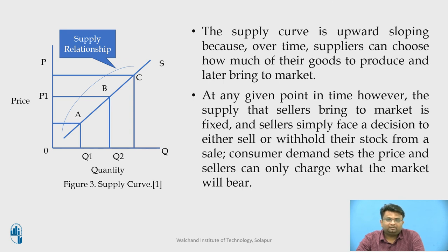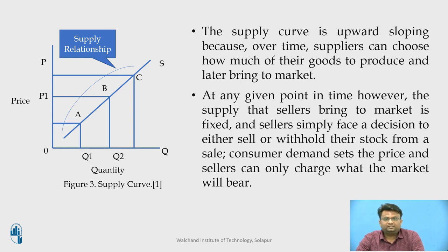At point A, the quantity supplied is Q1 at price P1. A supply curve is upward sloping because over time suppliers can choose how much of their goods to produce and bring to market. At any given point on the curve, however, the supply is fixed and the seller simply decides whether to sell or withhold stock. Consumer demand sets the price, and a seller can charge only what the market will bear. If consumer demand rises over time, prices rise and suppliers can devote new resources to production — new suppliers can enter the market, increasing the quantity supplied. Thus, demand ultimately sets the price in a competitive market and suppliers respond to the price they can expect to receive.